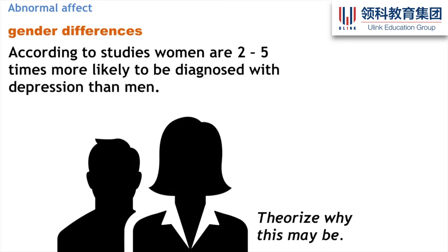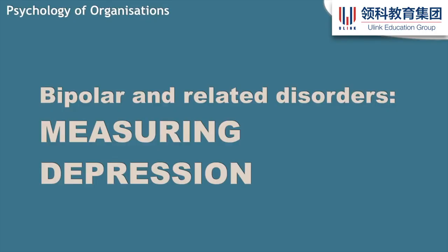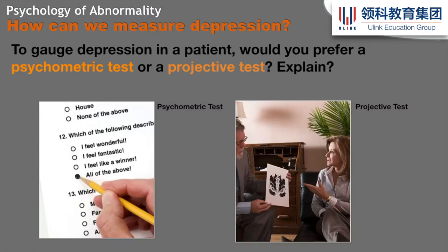Now that you know some of the symptoms of depression, we should talk about how to measure it. There are several ways to measure a psychological condition that's internal. We could use psychometric tests, which are the more preferred way nowadays than projective tests. Projective tests tend to be much more open to interpretation, with less scoring rubrics and less validity and reliability. So let's use a psychometric test — the BDI.